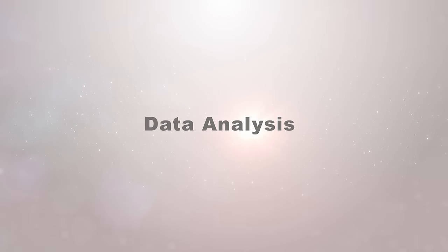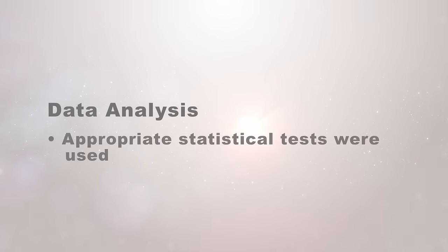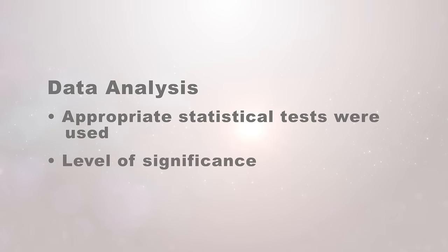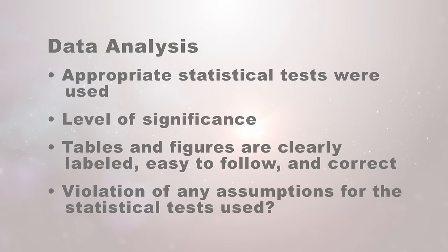Next is the data analysis section. Here you want to be sure that the appropriate statistical tests were used based on the level of measures and the variables being studied. The author should have set a level of significance for their study, and each table and figure provided in the paper should be clearly labeled, easy to follow, and correct and accurate. You want to be sure that the researcher has not violated any of the assumptions for the statistical tests they used.